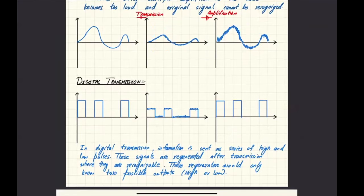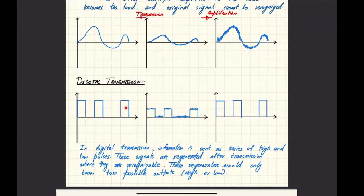There's an alternate approach. Suppose that the transmission is in the form of a series of high and low pulses — high pulse, low pulse, high pulse, low pulse, and so on. If transmission is in the form of series of high and low pulses, the same factors would still happen: it will pick up noise and it will attenuate as well.